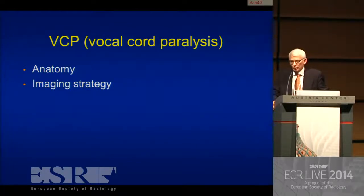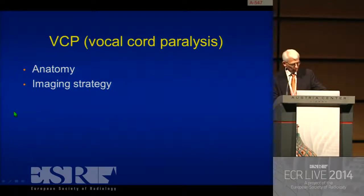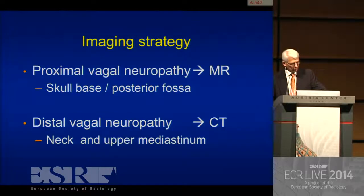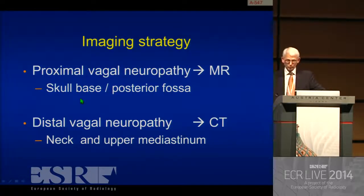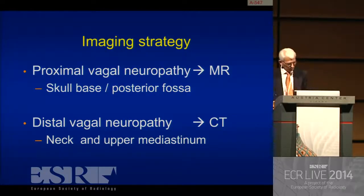From an imaging standpoint, vocal cord paralysis is the most interesting. For the rest of the lecture, I want to zoom in on VCP. For any radiological topic, we have to review the anatomy and develop an imaging strategy. About imaging strategy: if you have a so-called proximal vagal neuropathy, the lesion is located at the area of the skull base or posterior fossa — MR is the way to go. If you have a distal vagal neuropathy, the lesion is in the neck or upper mediastinum — CT will be the best choice.